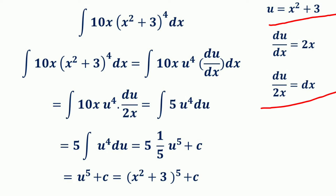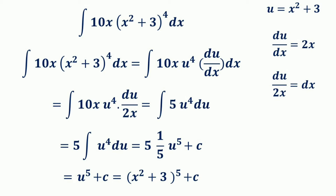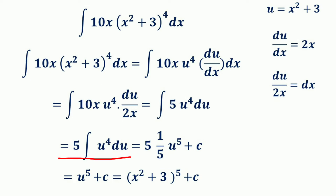Substituting these values into the original integrand, it becomes the integral of 10x · u⁴ · du/(2x). The 10x and 2x cancel to give 5, so this equals the integral of 5u⁴ du. Taking 5 outside the integral gives 5 times the integral of u⁴ du, which equals 5 · (1/5)u⁵ + c. The 5s cancel, giving u⁵ + c.